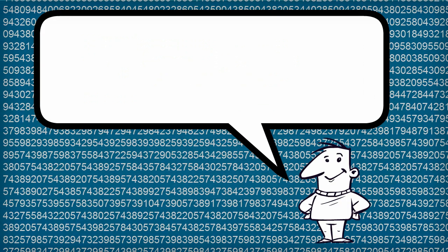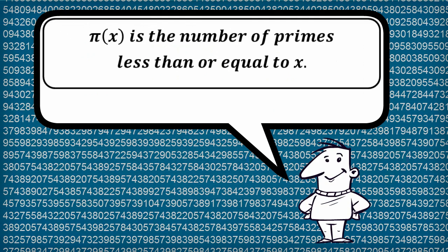Interestingly, we give this counting function the symbol π(x), even though it has nothing to do with the number π. So π(x) is the number of primes less than or equal to x. Again, this has nothing to do with the π which is equal to 3.14159, etc.